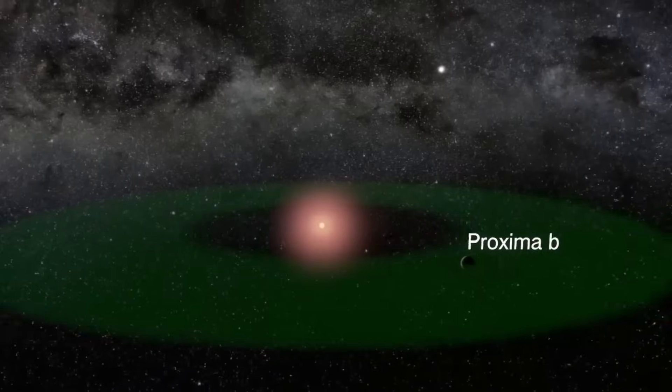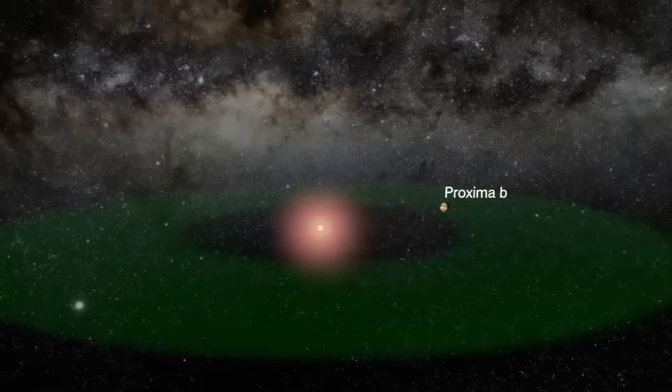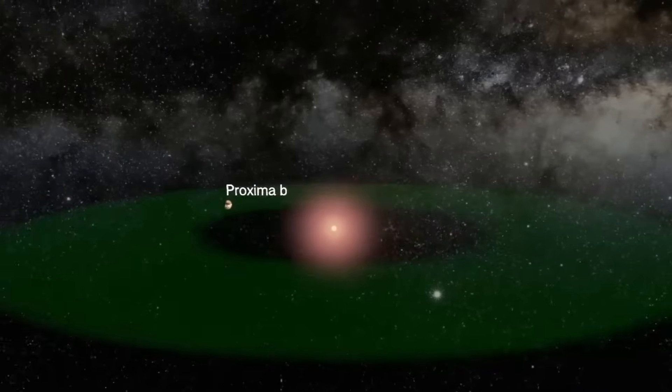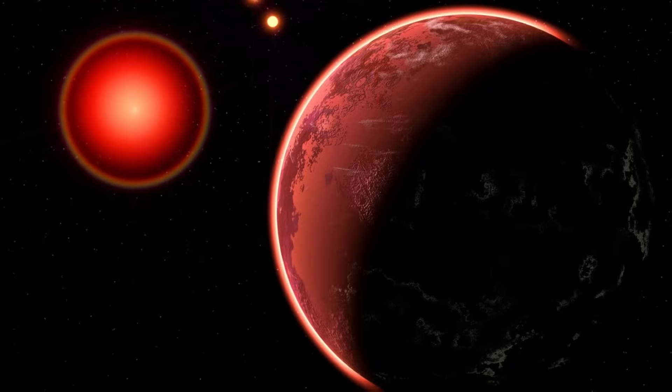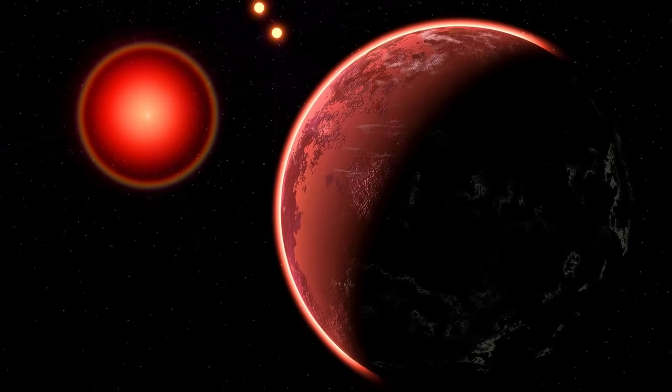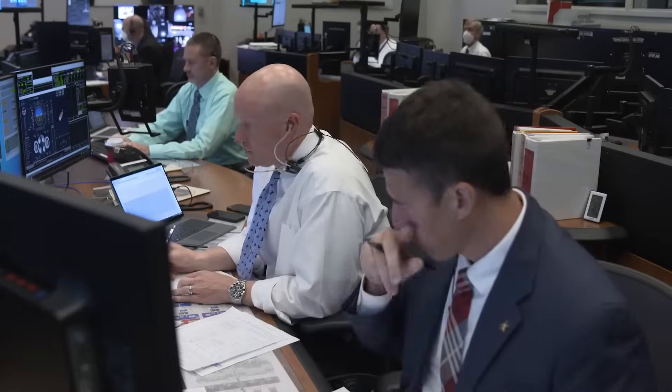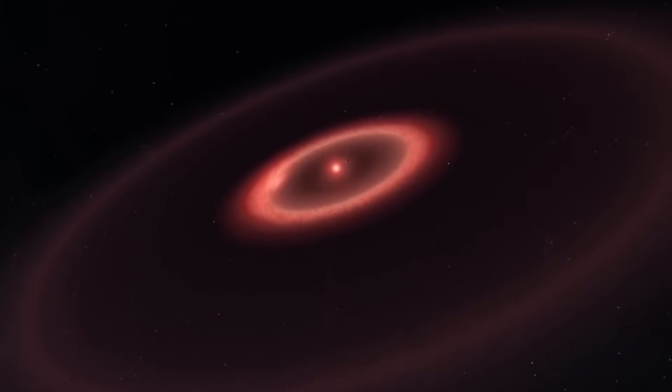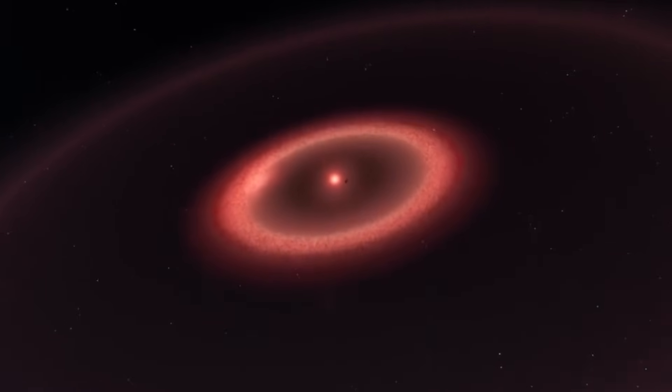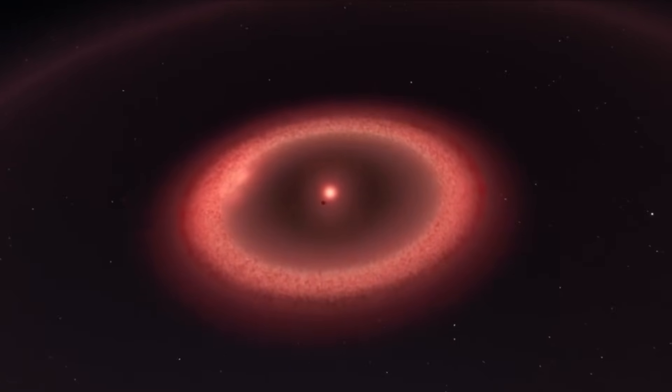One reason could be the Goldilocks zone. The Goldilocks zone is a region around a star where conditions are just right for liquid water to exist on a planet's surface, potentially giving rise to life. Proxima B's proximity to its star presents unique challenges and opportunities for researchers. The exoplanet's orbit is just a fraction of the distance between Earth and the Sun, completing a year in 11.2 days.